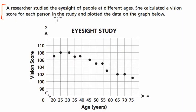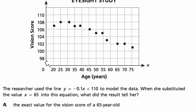A researcher studied the eyesight of people at different ages and calculated a vision score for each person in the study, plotting the data on the graph below. So here's our graph, let's take a look.